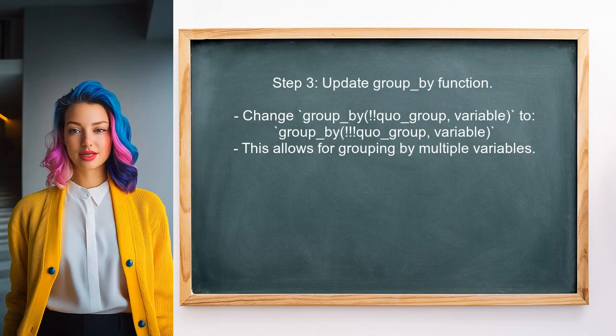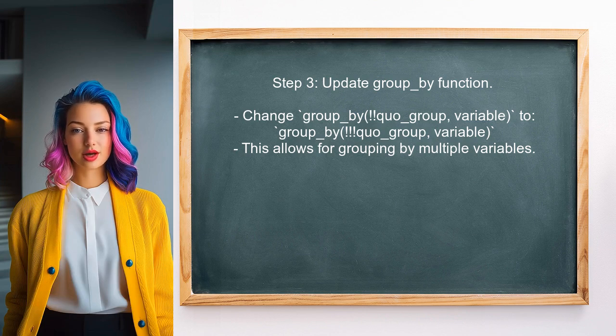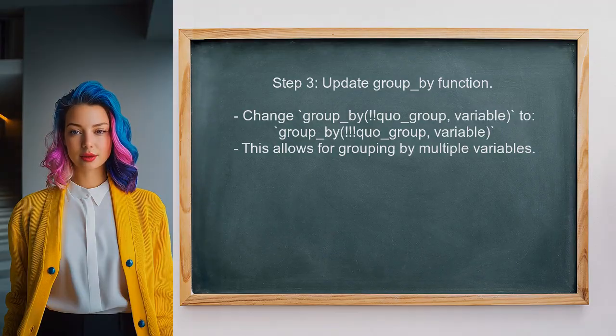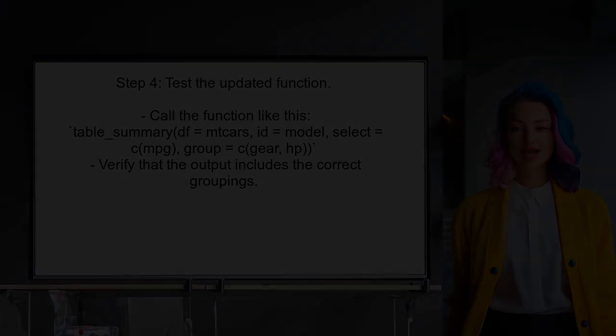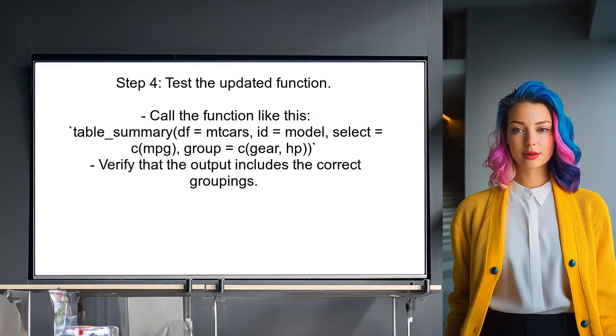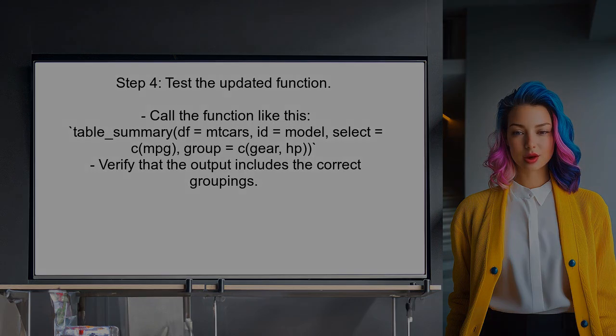Now the user should modify the group by function to also use the unquote splice operator. This ensures that all specified grouping variables are included in the summarization. Finally, the user should test the updated function with multiple grouping variables to ensure it works as expected. They can do this by calling the function with the desired parameters.